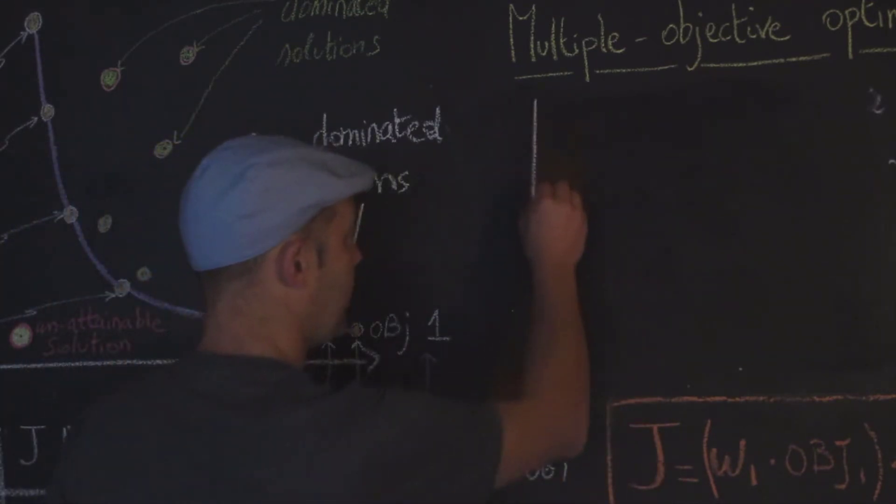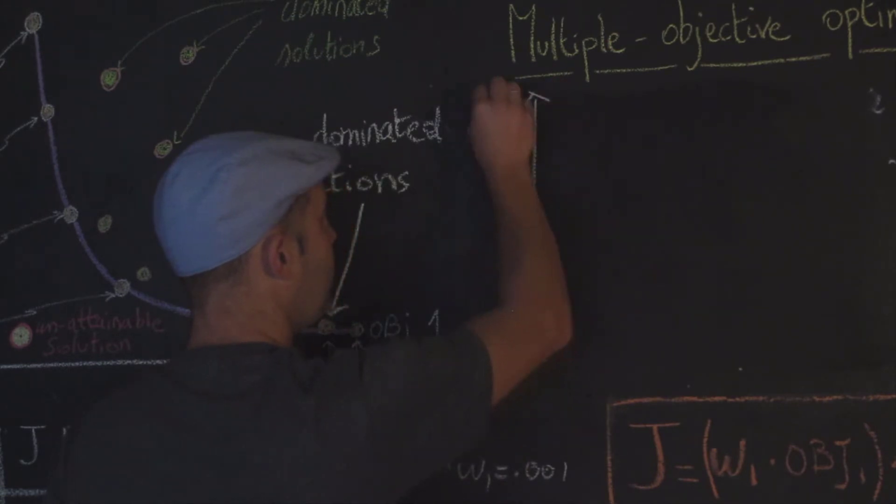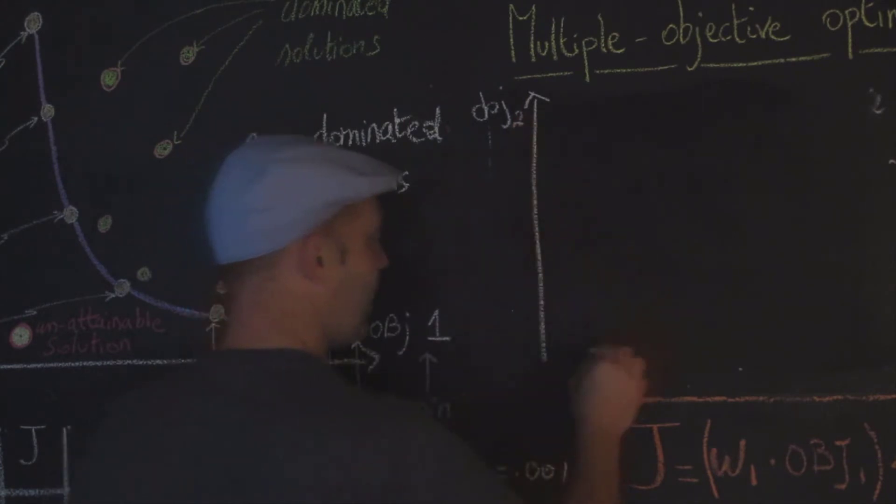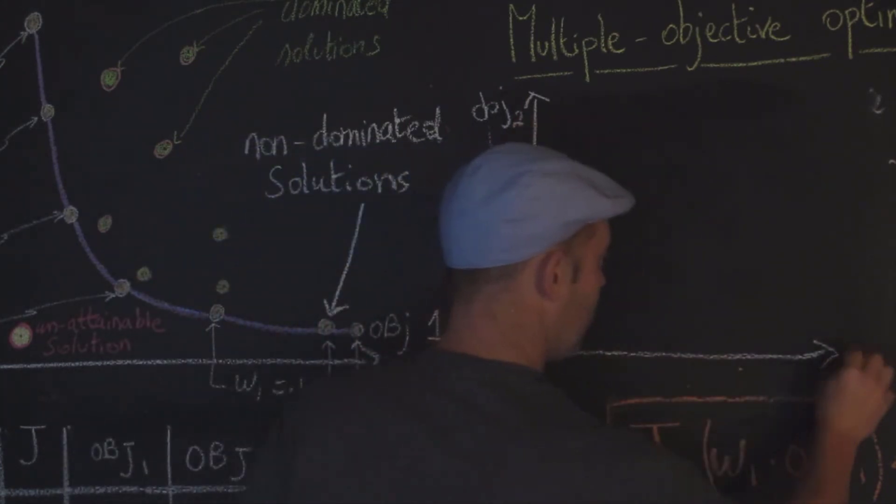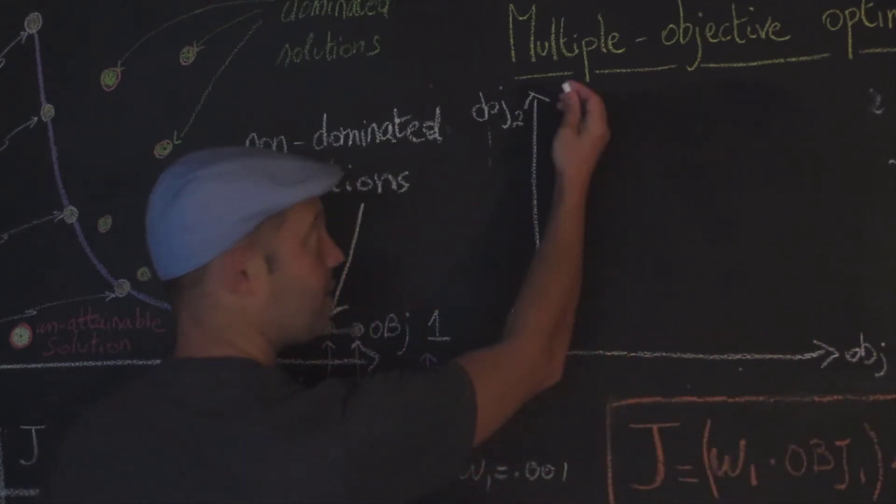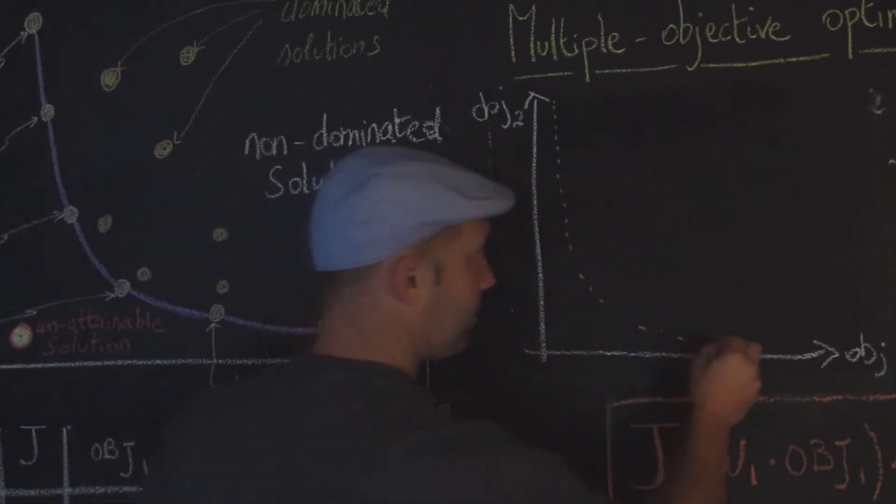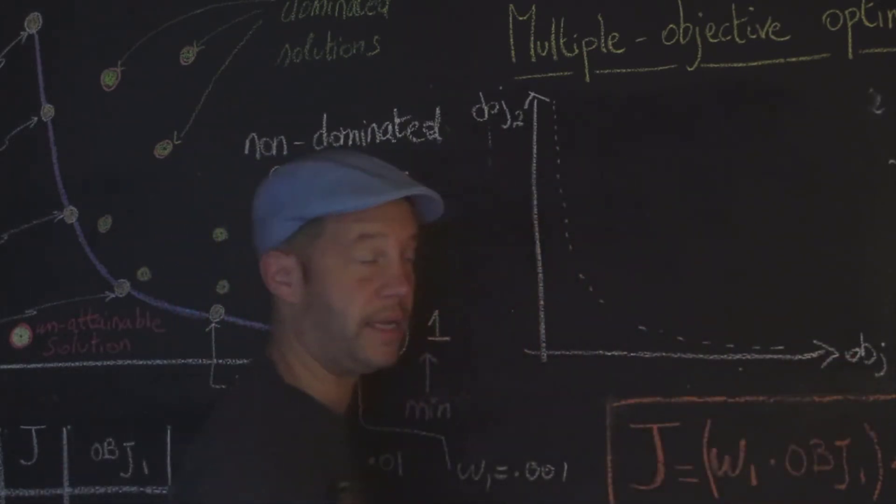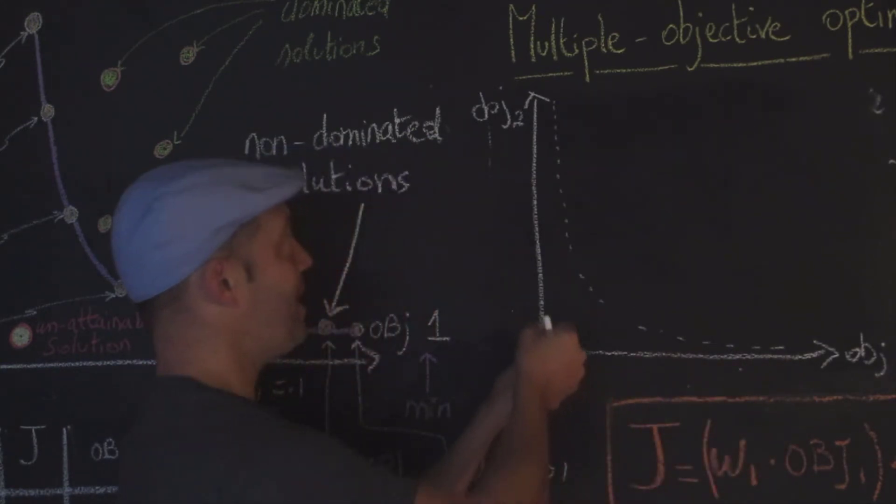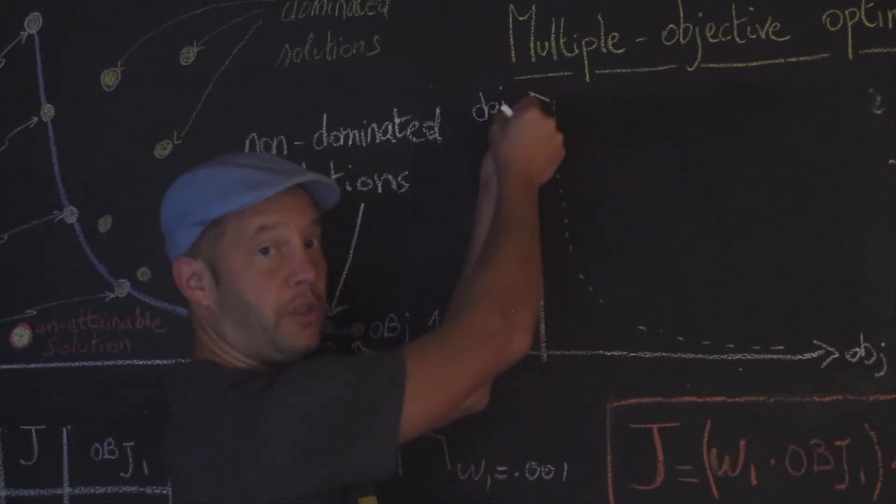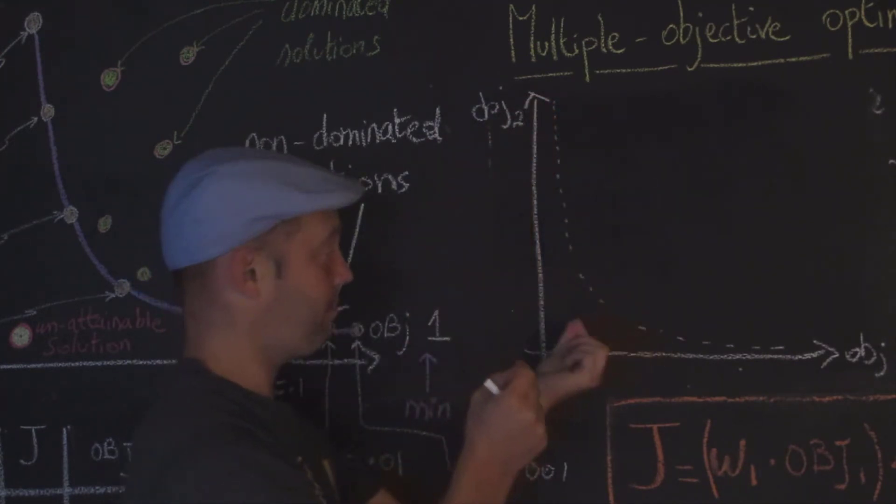We have objective two that we will try to minimize, and we have objective one that we also try to minimize. When I try to minimize objective one, it's going to be at the cost of objective two, and vice versa. The example is very clear: if objective one is to minimize the cost of a school system, that is going to be at the cost of the total travel by the students, because in the worst case scenario there's only one school and students have to travel from very far.